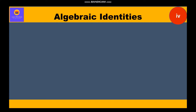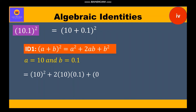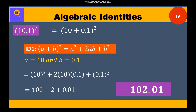Now let's move to the fourth part: 10.1 whole square. 10.1 can be written as (10 + 0.1) whole square. This is identity 1: (a + b)² = a² + 2ab + b². Here a = 10 and b = 0.1. Substituting: 10² + 2×10×0.1 + 0.1² = 100 + 2 + 0.01 = 102.01. So this is our final answer.